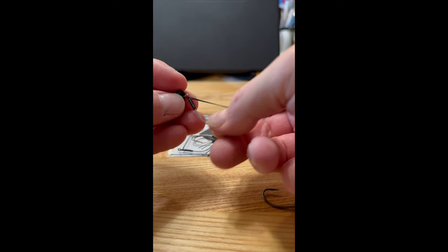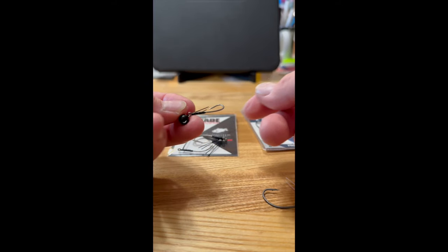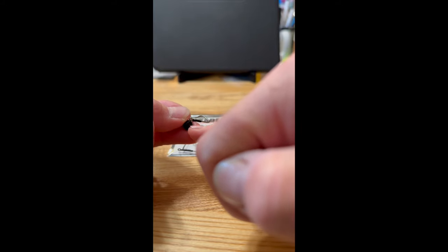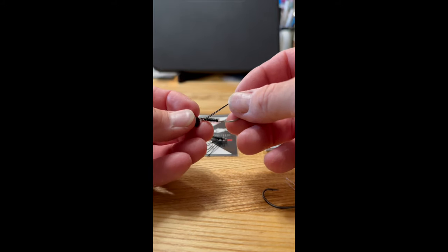So once you put it in there like that, there you have your weighted hook, and then you tie your line on here, and that keeps everything together.